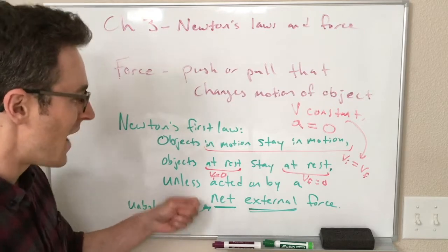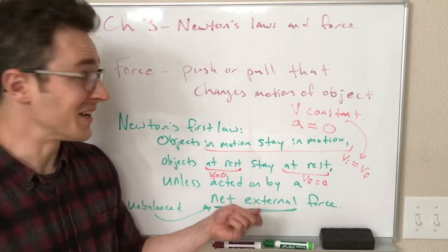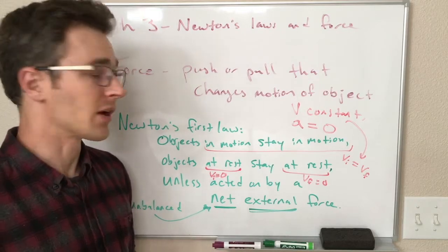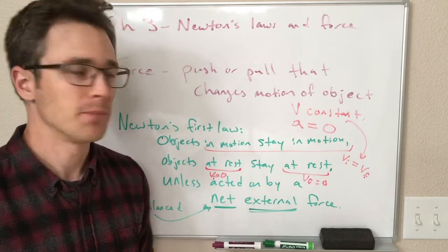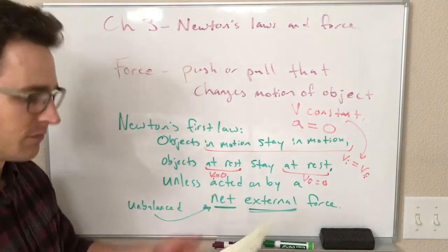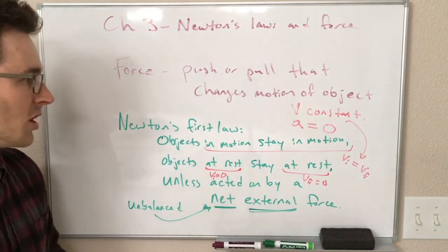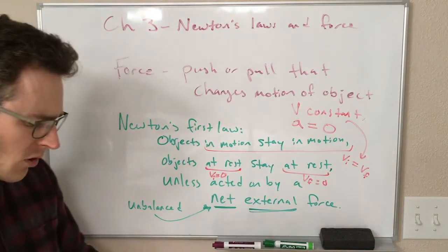Flipped around, that means that net external forces are the things that make acceleration, that cause an object to accelerate, that cause an object to change its velocity. And that is the direction we're heading here with this, looking at how these forces can change the motion of an object.